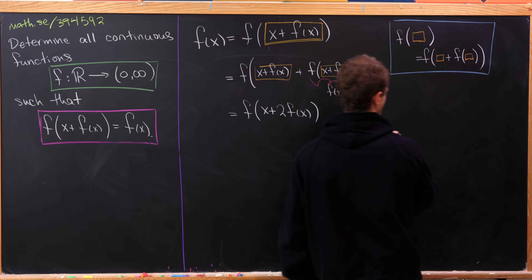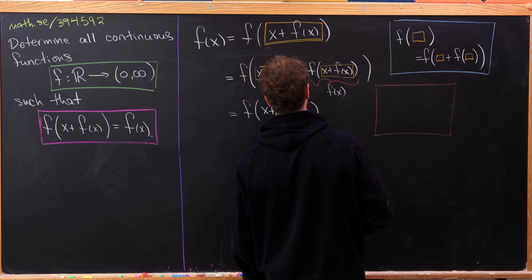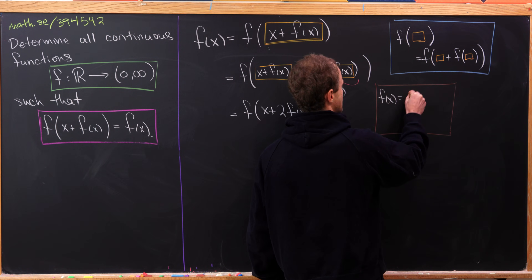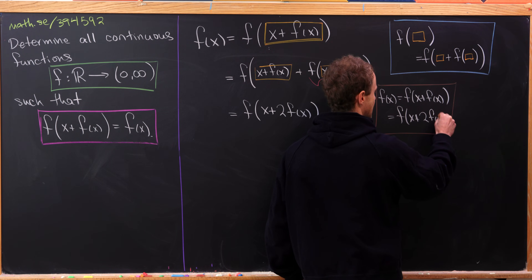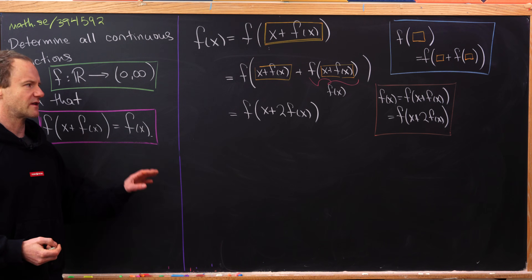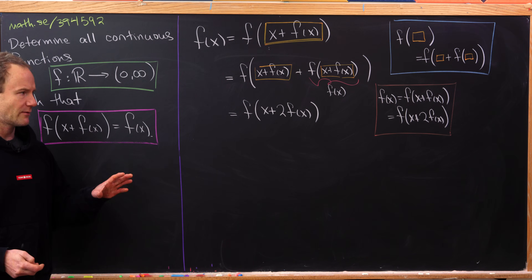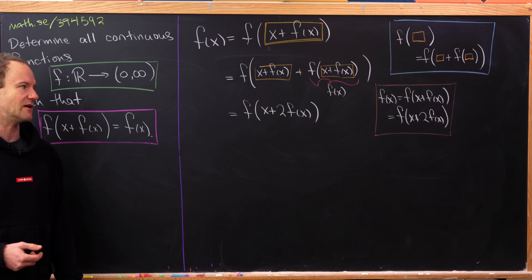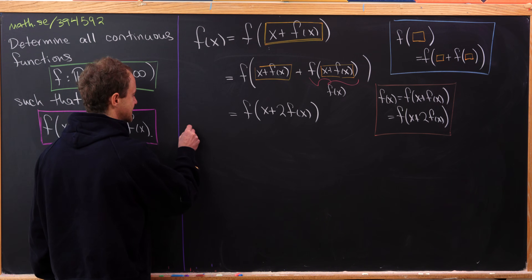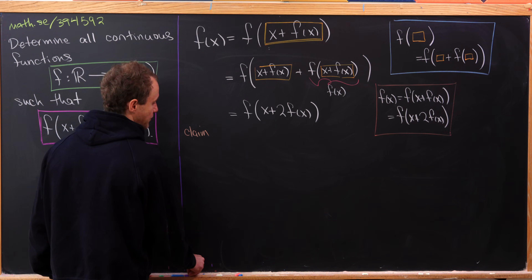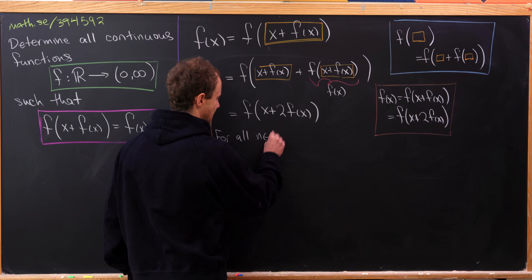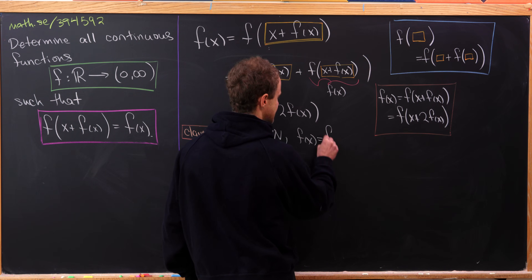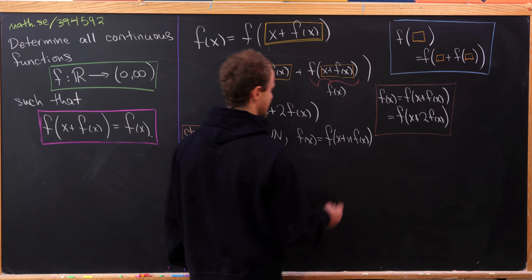So we've seen that f of x equals f of x plus f of x, and it also equals f of x plus 2 times f of x. There's probably nothing special about the number 2 — this likely holds for all additions of new f of x terms inside that function. We can summarize that in the following claim, which we'll prove by induction: for all natural numbers n, f of x equals f of x plus n times f of x.